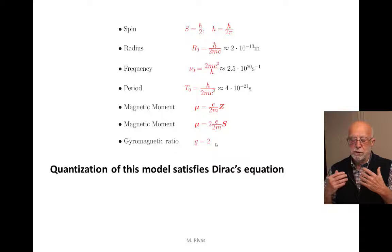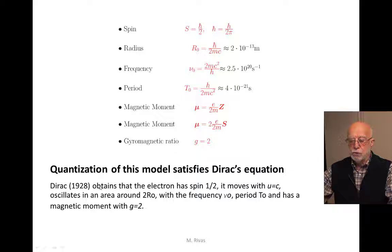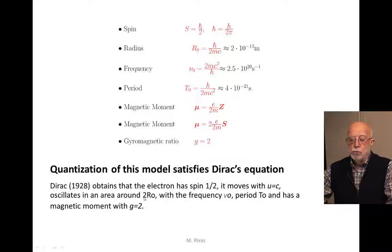This model quantizes and when it quantizes it satisfies Dirac's equation. It is not strange then that when we compare this data — which Dirac in 1928 obtained from the relativistic model for describing the electron — he obtains that the electron has spin one-half, that the velocity of the electron is C, that it oscillates in an area around 2 times the radius r (the Compton wavelength), with that frequency, with that period, and has a magnetic moment with G equals 2.